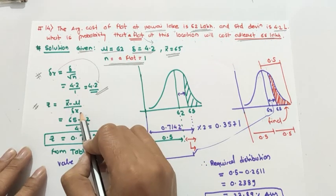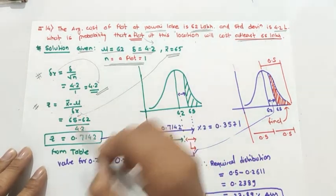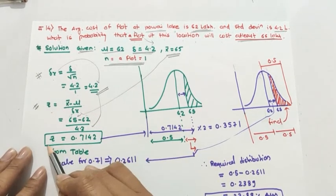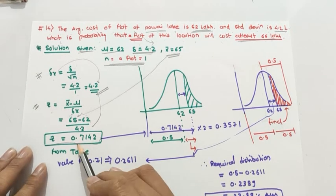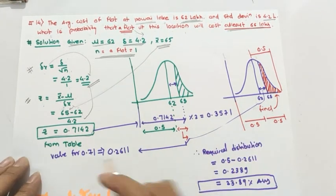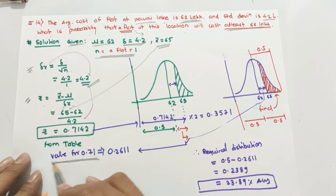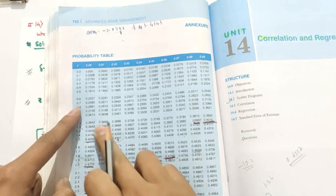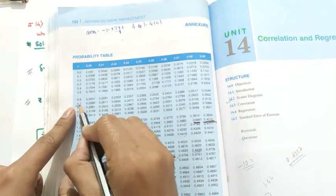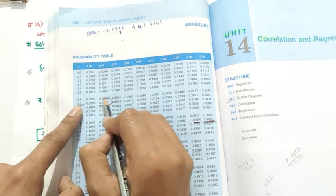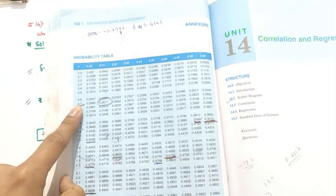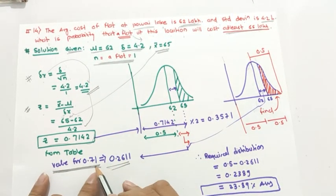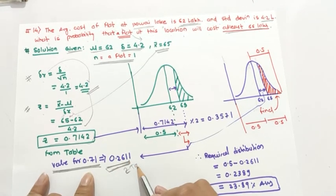Second step: calculate z. z equals x-bar minus mu upon delta-x, which is 65 minus 62 divided by 4.2, giving 3 divided by 4.2 equals 0.7142. From the z-table, the value for z equals 0.71 is 0.2611.